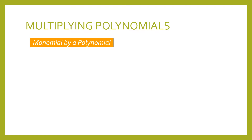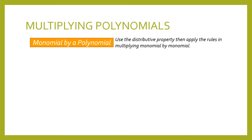This time, we move on to multiplying a monomial by a polynomial. It is important that we have mastered multiplying a monomial by a monomial for us to be able to answer the next examples. We use the distributive property, then apply the rules in multiplying monomial by monomial. Here is an example.